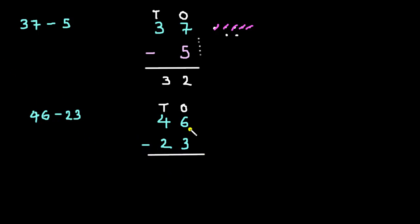We have 6 at 1's place and we want to subtract 3 from it. So, count descending order from 6 up to 3 numbers: 5, 4, 3. So, 6 minus 3 is equal to 3 and here 4 minus 2. So, 4, 3, 2. Answer is 2. So, 46 minus 23 is equal to 23.